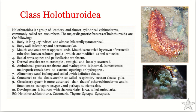The body wall is leathery and dermo-muscular in nature. They are elongated along the oral-aboral axis, so the mouth and anus are on opposite sides. They lie on one side which is usually flattened — the side towards the substratum is almost flattened and acts as a permanent ventral side, giving them a secondary bilateral symmetry. The tube feet surrounding the mouth are enlarged, highly modified, and referred to as tentacles.